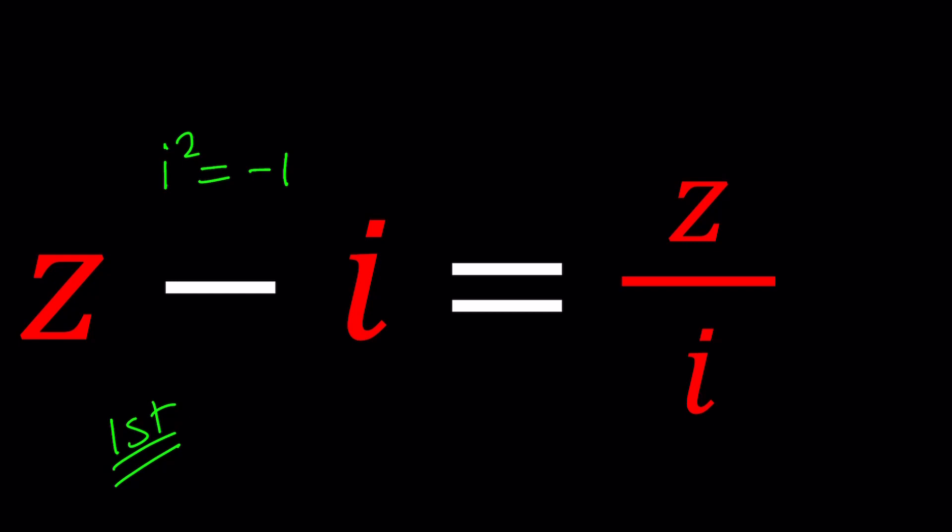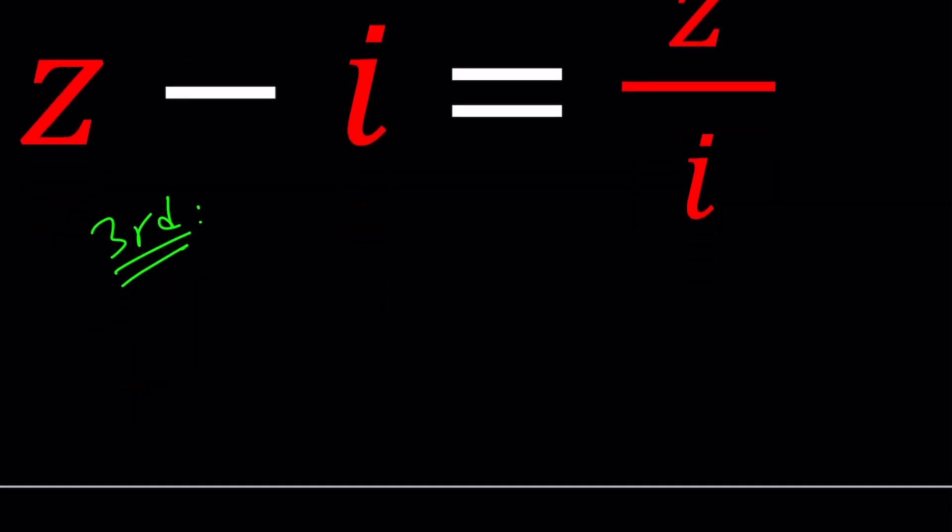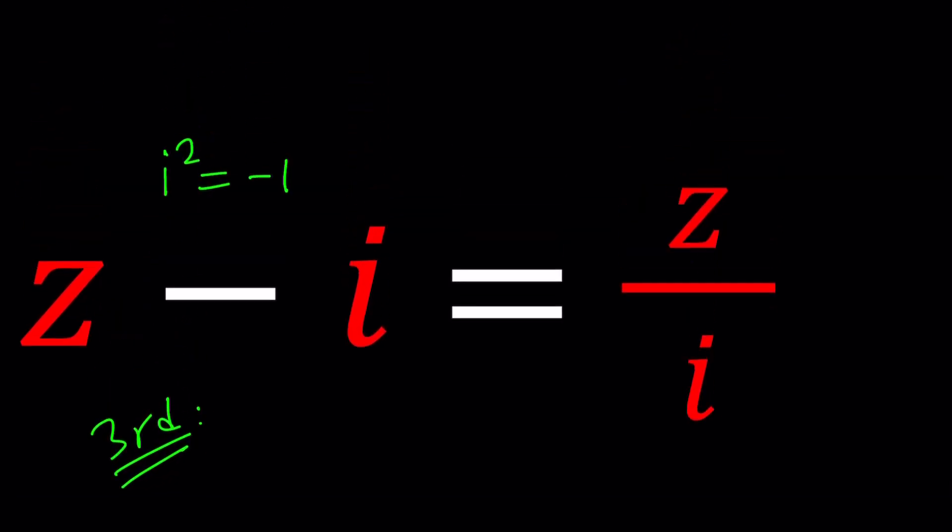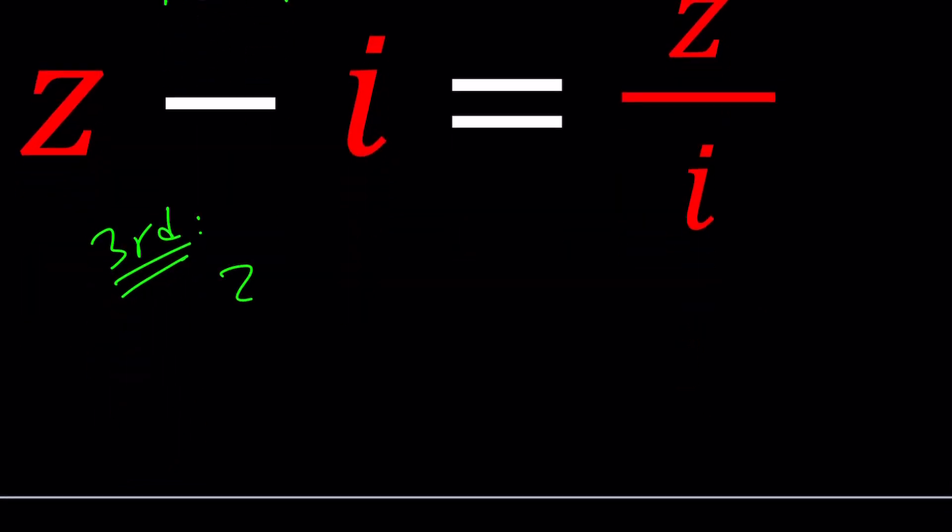Actually, I want to change my mind. I want to start with the third one. This is more fun. Okay, so for my third method, I'm going to replace Z with A plus B I. Why? Because Z is a complex number. So let's do it.